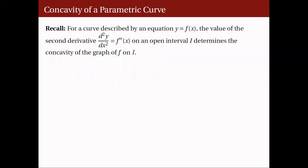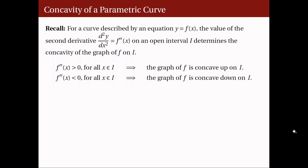Let's now talk about the concavity of a parametric curve. Recall that for a curve described by y equals f of x, the concavity of the graph of f on an open interval I is determined by the value of the second derivative f double prime of x. If f double prime of x is positive for all x in I, then the graph is concave up on I. If f double prime of x is negative for all x in I, then the graph is concave down on I. We already know how to compute dy over dx for a parametric curve, so how do we compute the second derivative of y with respect to x?